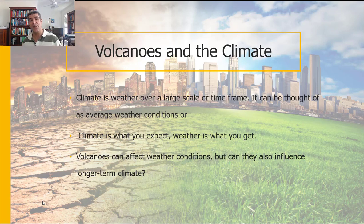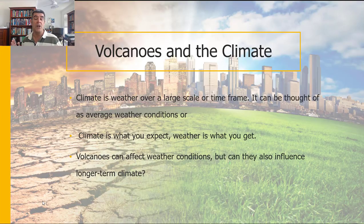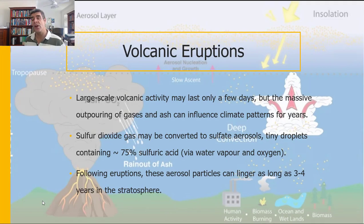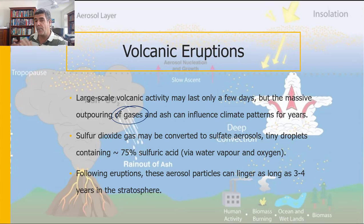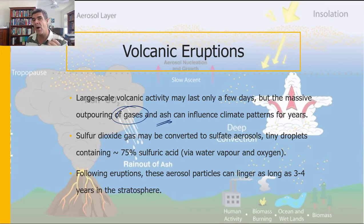If climate is our long-term, large-scale picture of weather, then how can volcanoes affect long-term climate patterns? We want to look at large-scale volcanic activity and its impact. The first important thing is the production of gases, which can be linked to changes in weather patterns in the short term and potentially climate over the longer term. The other important thing is particulate matter — small particles in ash clouds that can influence climate patterns for some years afterwards.